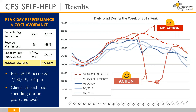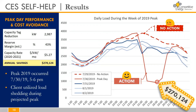This peak day demand curtailment effort saved this customer a total of $270,000 on their annual electricity costs. That's how the CES self-help program works — we help clients plan and prepare for the events through our system of detailed notifications.